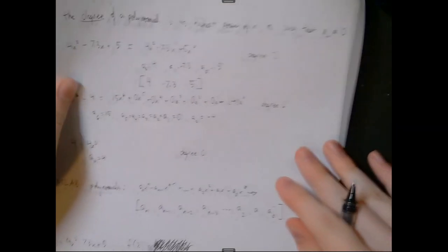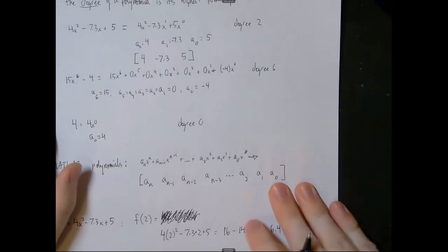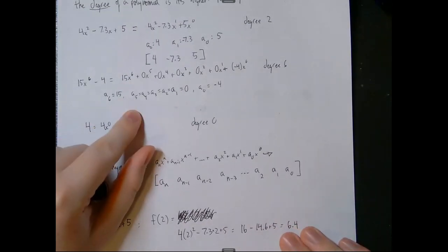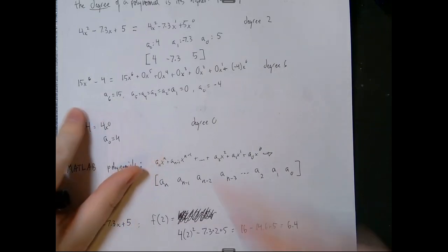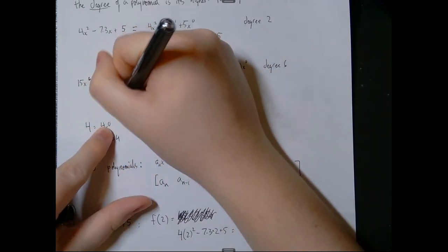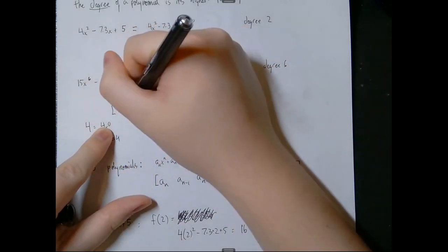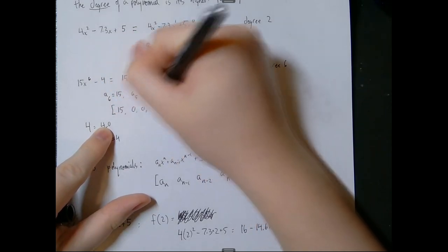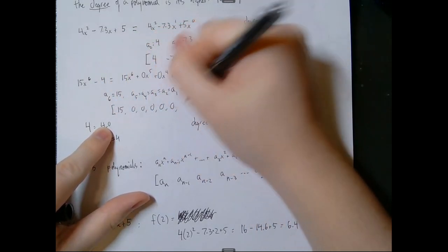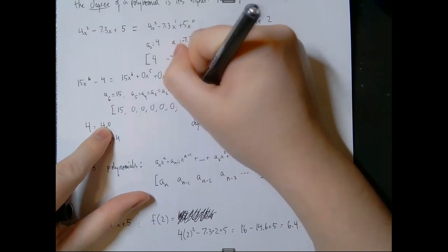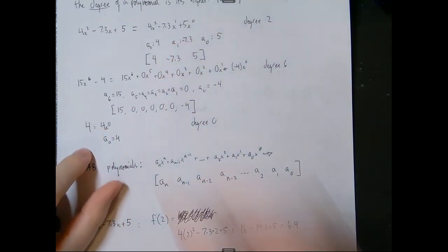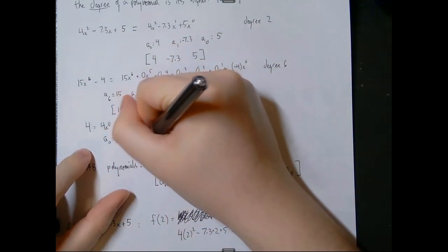Similarly, 15x to the sixth minus 4 is represented as [15, 0, 0, 0, 0, 0, -4]. And the constant 4 would just be [4].